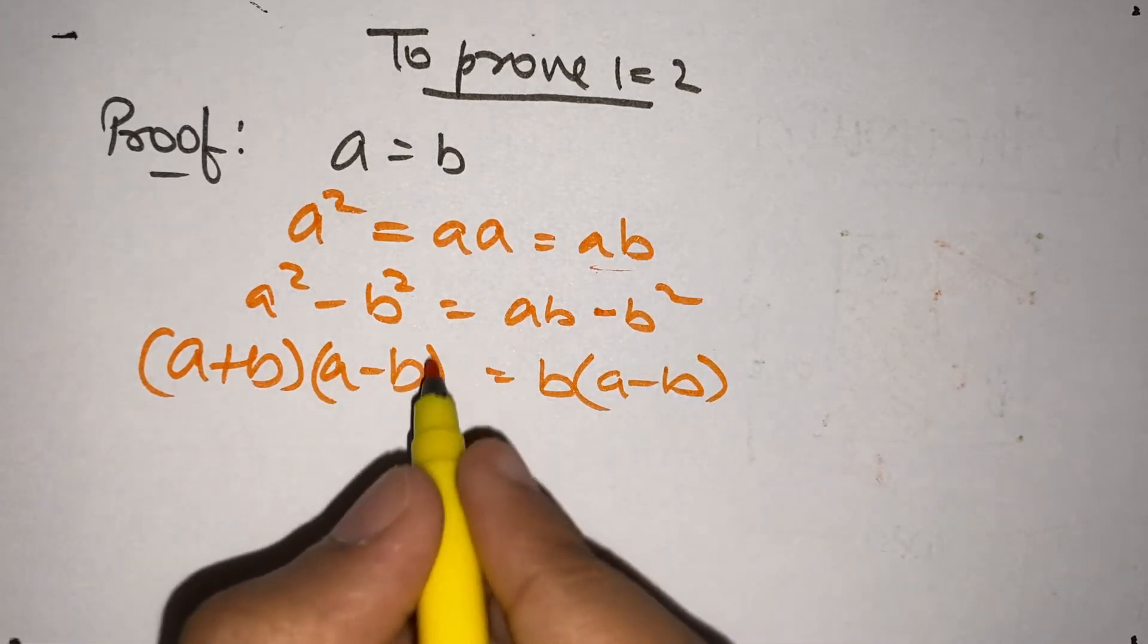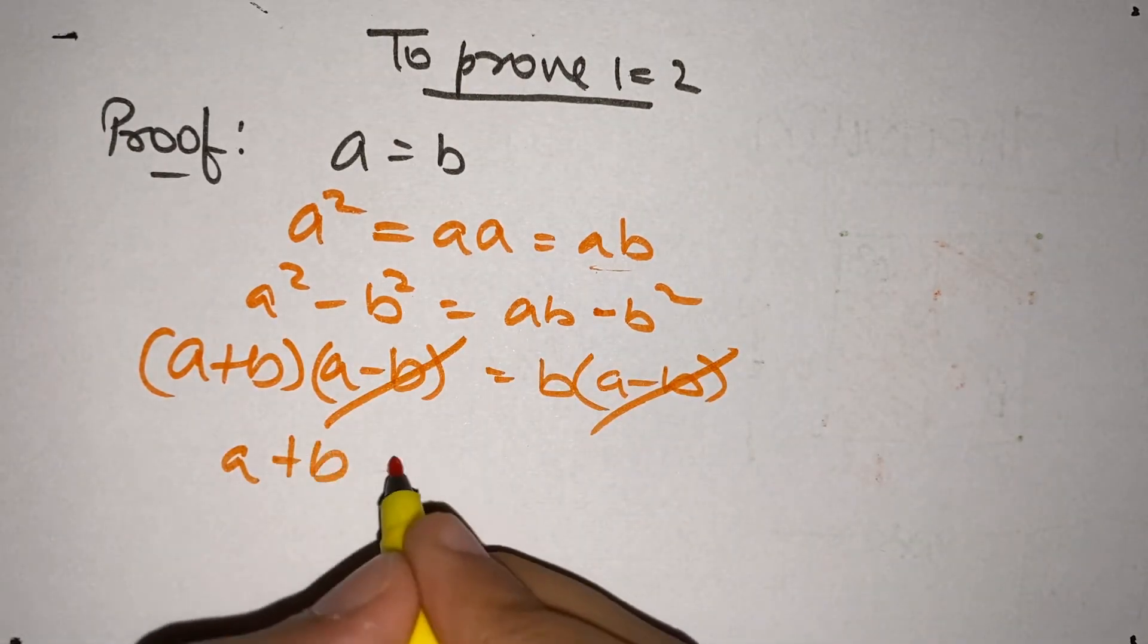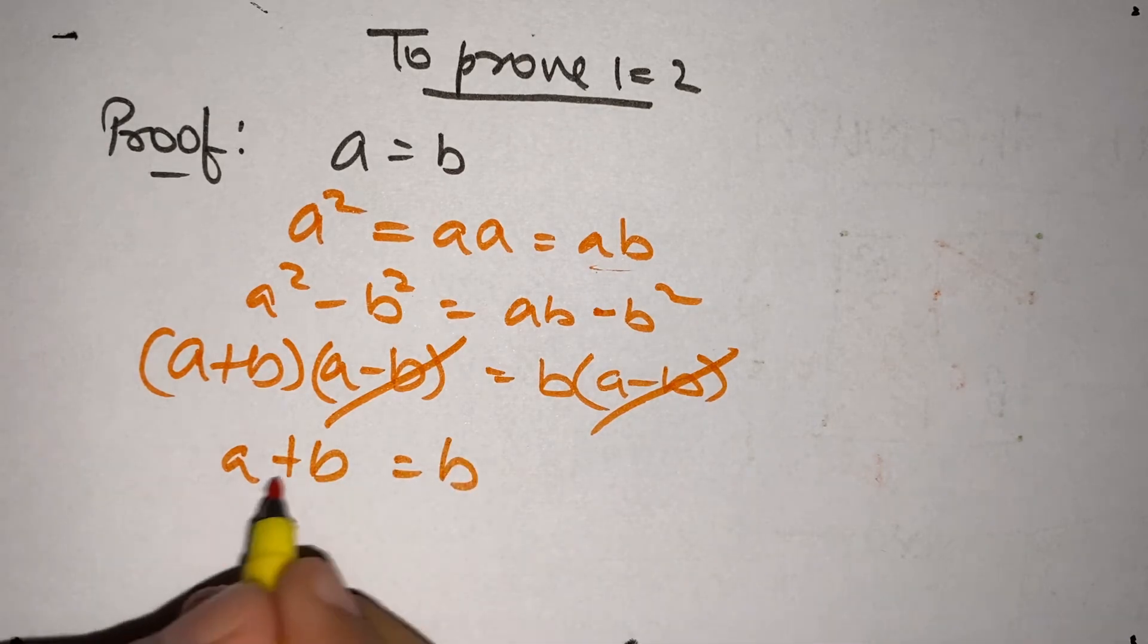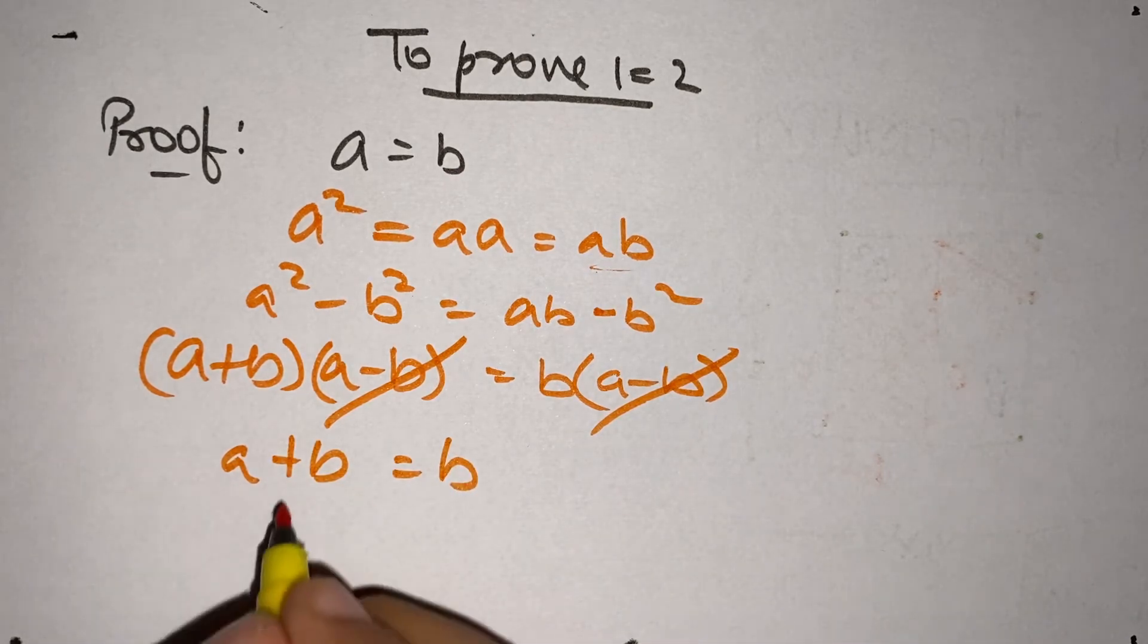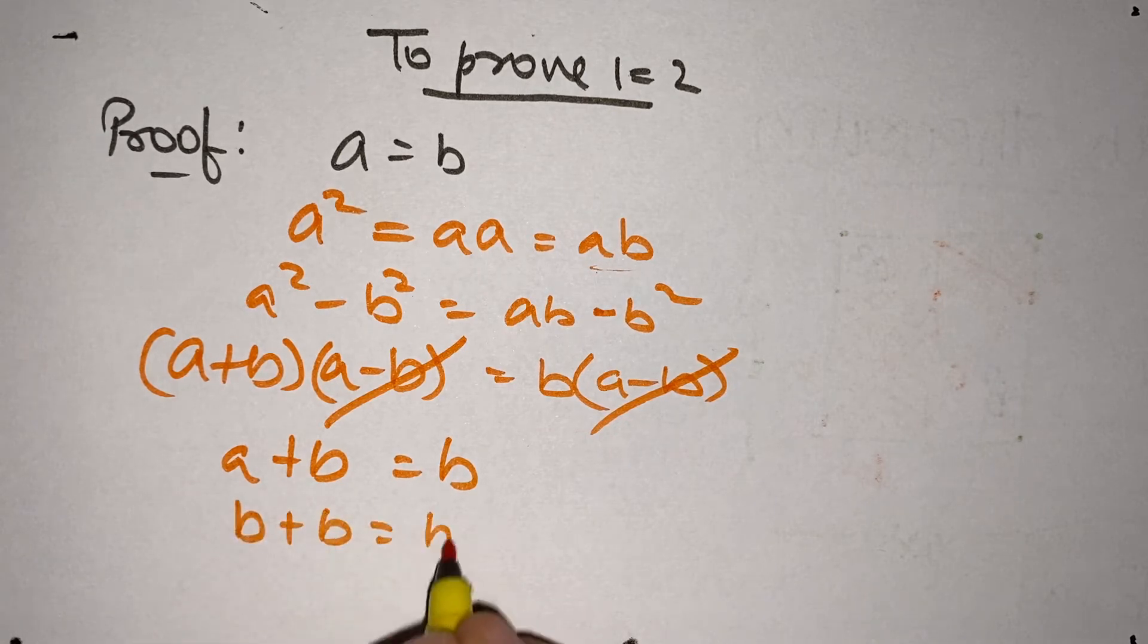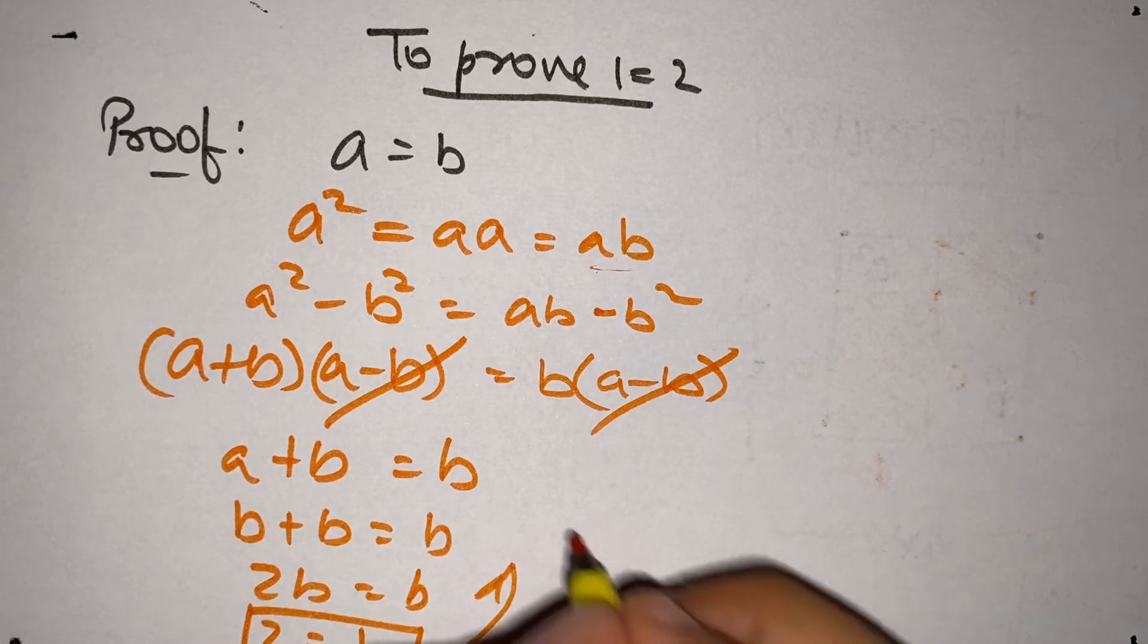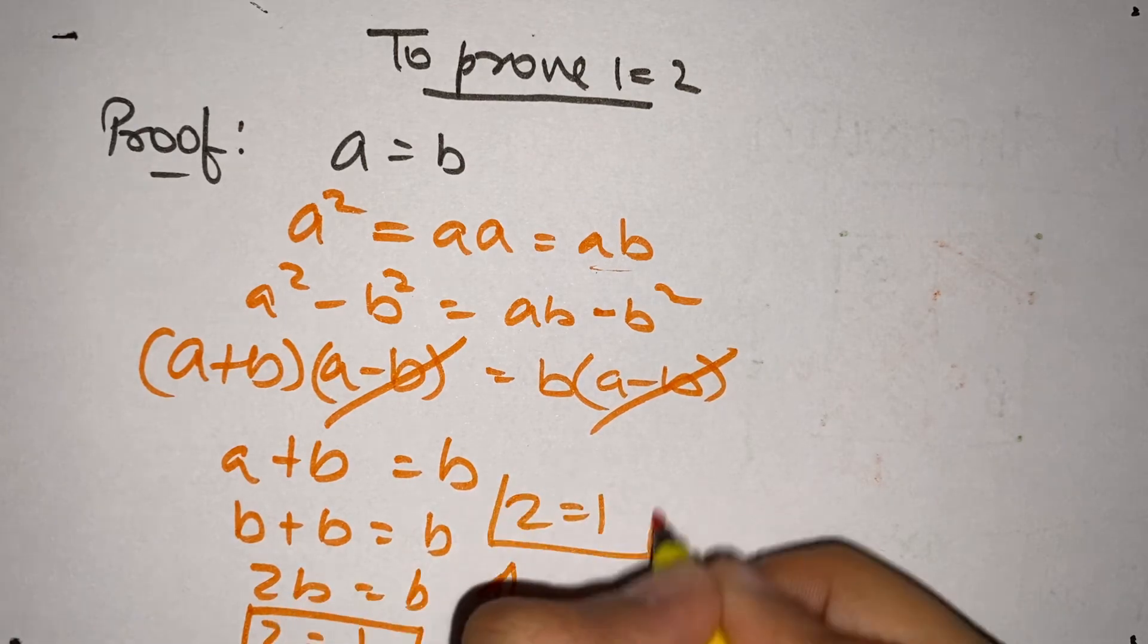Now, let's divide A minus B from both sides. They cancel out. We are left with A plus B equals to B. Can we write this A as in B? Okay, let's do that. B plus B equals B. 2B equals B and 2 equals 1. Let's write it here. 2 equals 1.